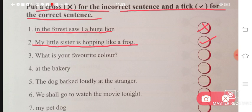Number three, 'What is your favorite color?' I can understand its meaning, so yes it is also a sentence. Next is number four, 'at the bakery' - I cannot understand any meaning from this, so no it is not a sentence.